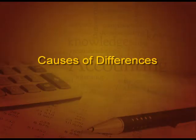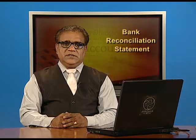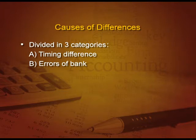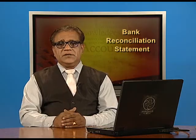What are the causes of difference? These are divided into three categories. First, timing difference — I will explain this. Second, errors of bank, which are committed by the bank. And the third, errors of the firm, that is errors committed by the accountant or the staff of the organization.